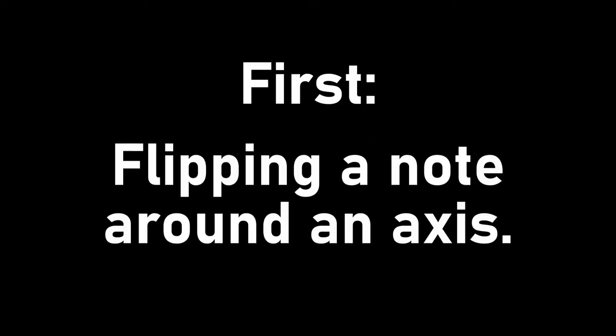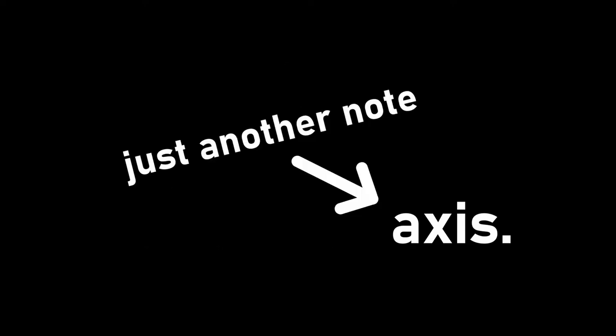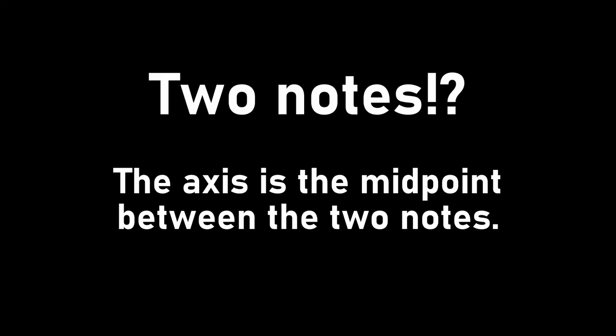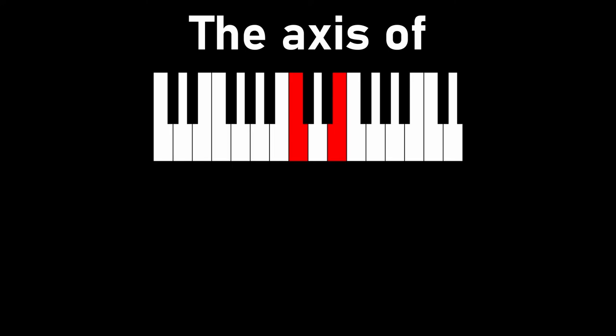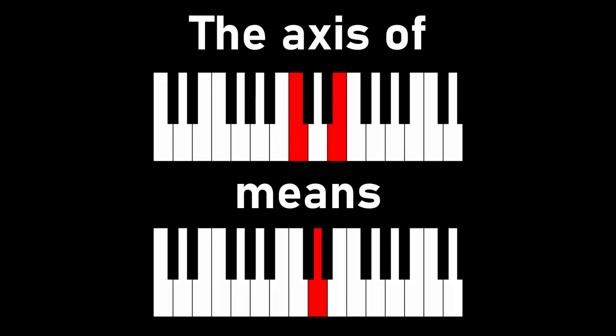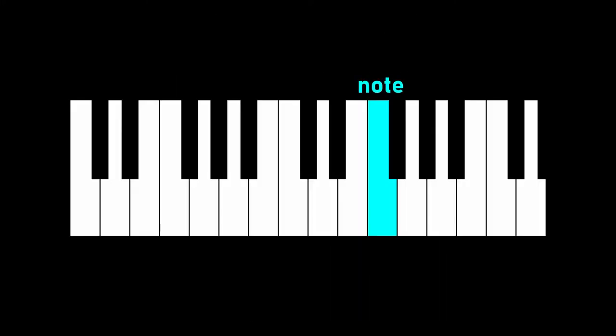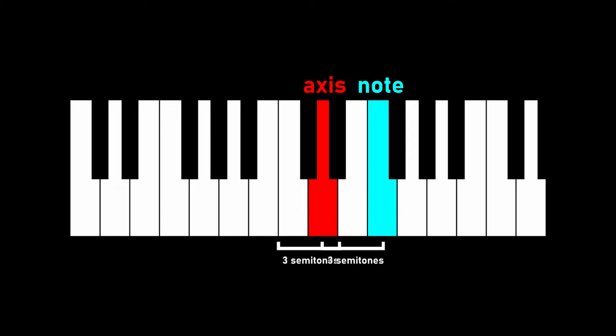First we need to understand flipping a note around an axis. An axis is just another note. Sometimes we define the axis using two notes, but all that means is that the axis is the midpoint between those two notes. So if I said the axis of C and E, that just means D. To flip a note around an axis, you take how far the note is above the axis, and you go that far below the axis, or vice versa.